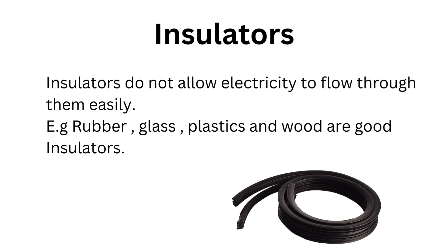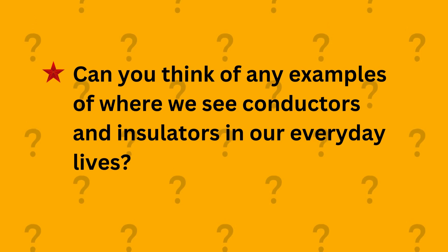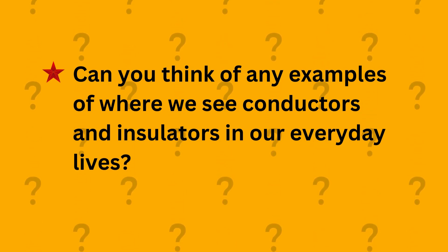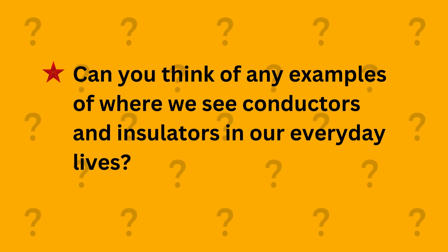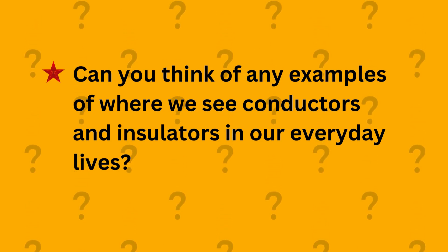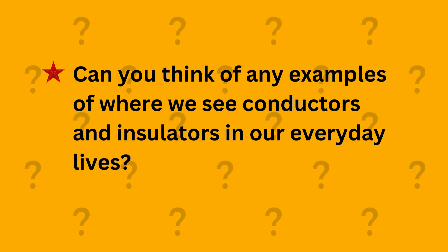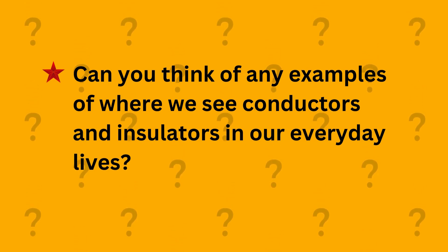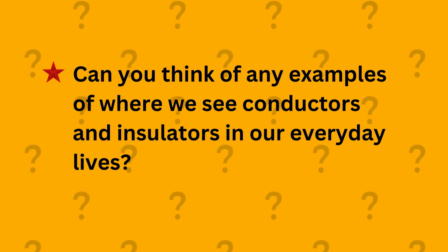Insulators are the opposite of conductors — they do not allow electricity to flow through them easily. Materials like rubber, glass, plastic, and wood are good insulators. Can you think of any examples of where we see conductors and insulators in our everyday lives? Look around your house or classroom and leave your answers in the comments below.